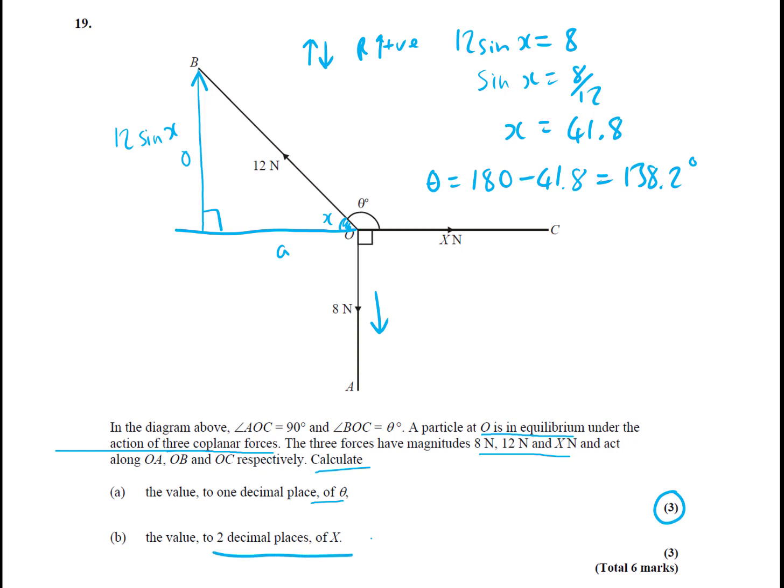The value to two decimal places of x. Well this is going this way. So let's resolve left and right. This is only acting down, so we have to act this way. What's happening here? We can see here that's cos, so that's 12 cos x, which we know is 41.8. So let's resolve this way as positive. So x is going to equal 12 cos 41.8. So x equals 8.94 newtons, and that's another three marks, and we can all do that. Wonderful.